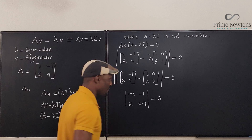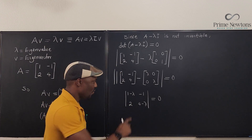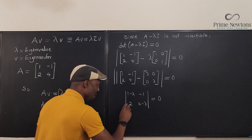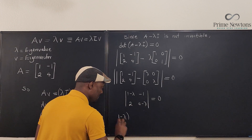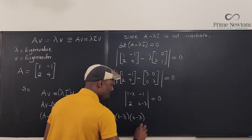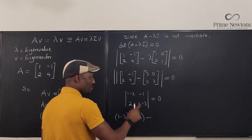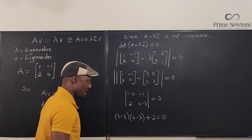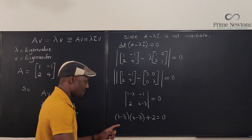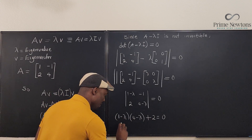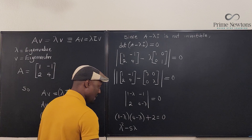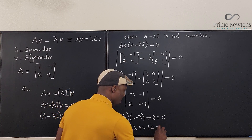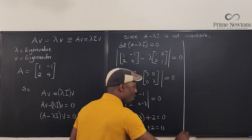To compute the determinant, multiply the diagonal entries and subtract the off-diagonal product: (1-λ)(4-λ) - (2)(-1) = 0. Expanding: (1-λ)(4-λ) + 2 = 0. Distributing gives λ² - 5λ + 4 + 2 = 0.